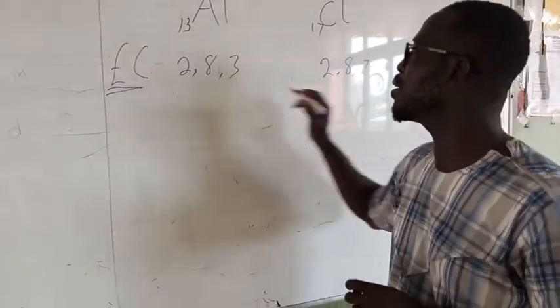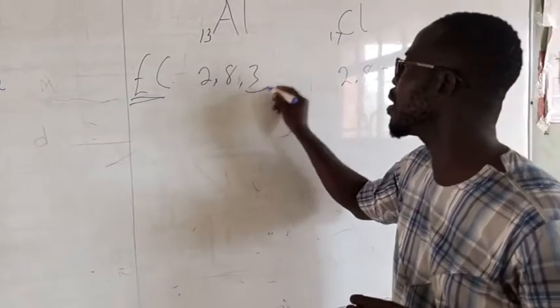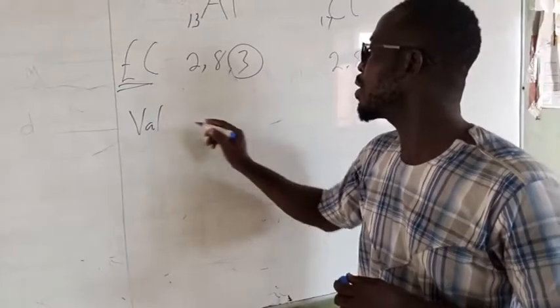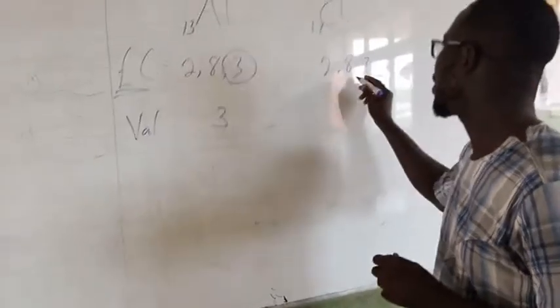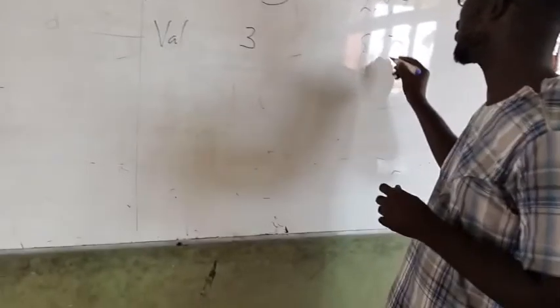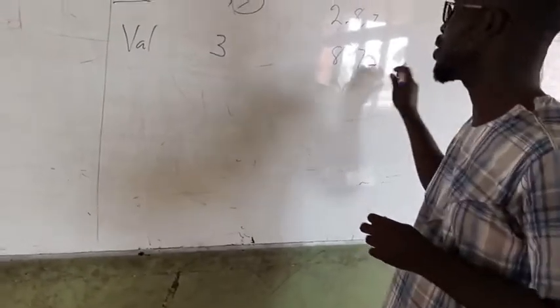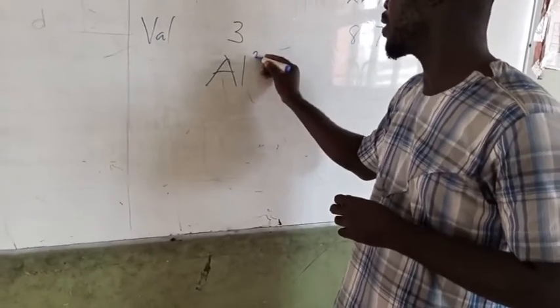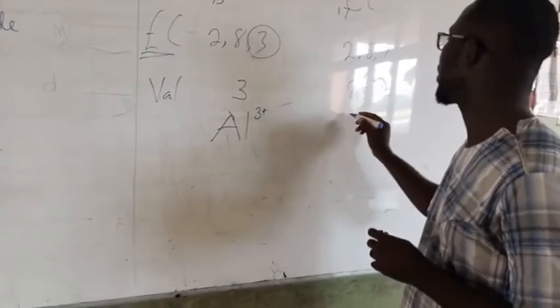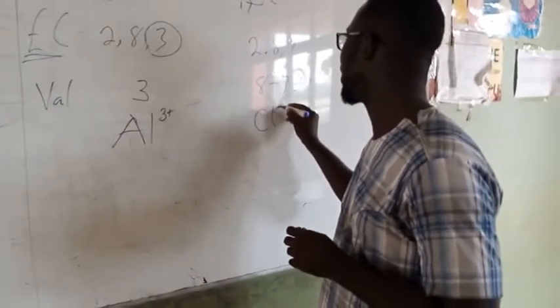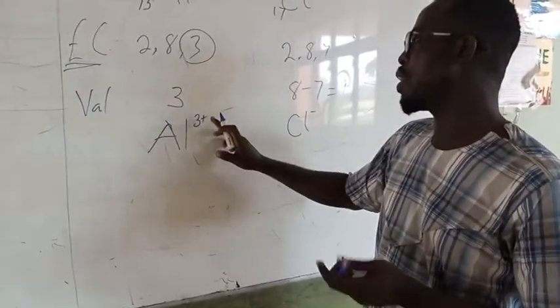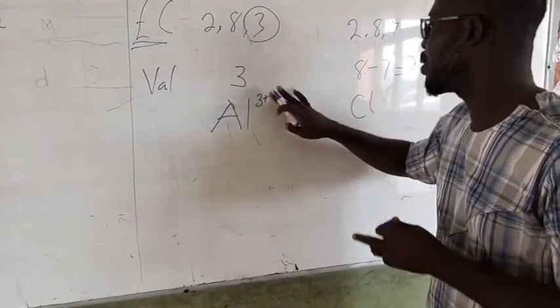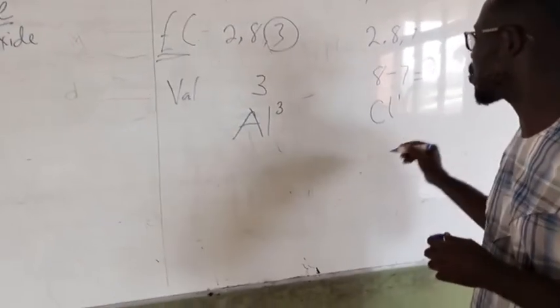We can find our valencies from our electron configuration. Here it satisfies the first rule. So our valency is 3. And then here our valency 8 minus 7 equals 1. So aluminum has a valency of 3, and then chlorine here has a valency of 1. Just put the valencies there, 3 and then 1.